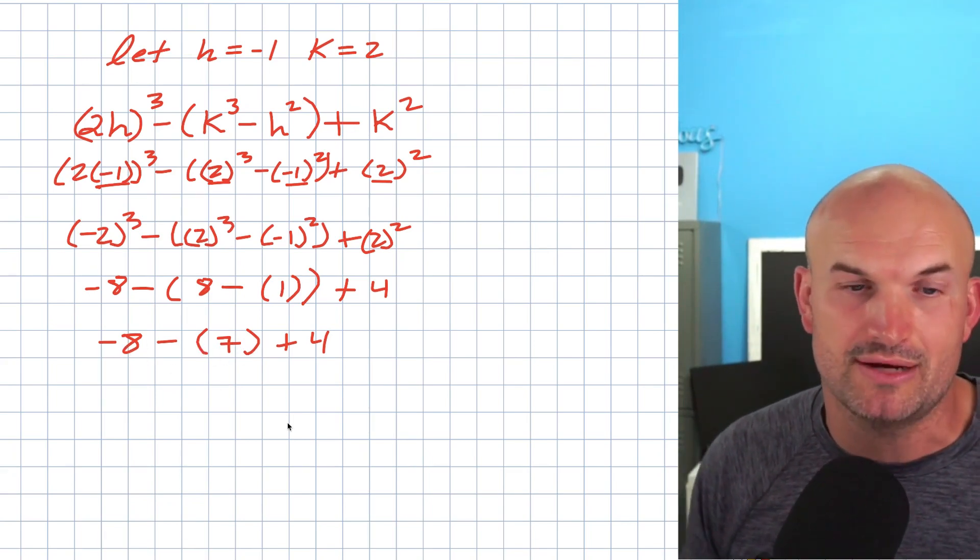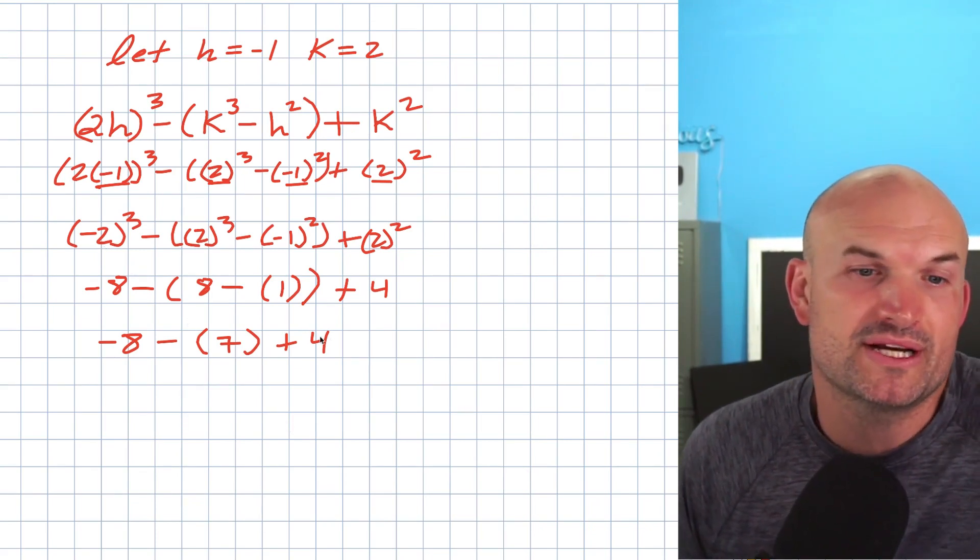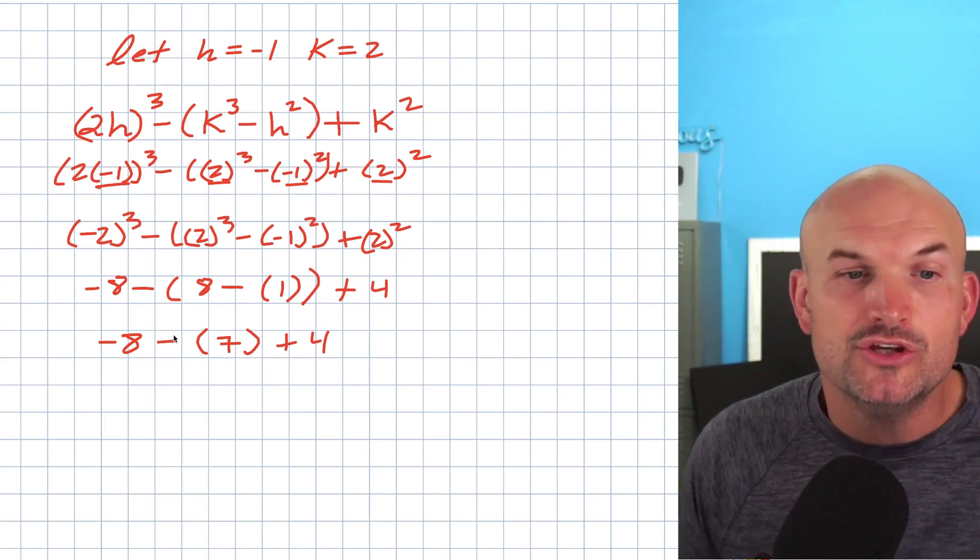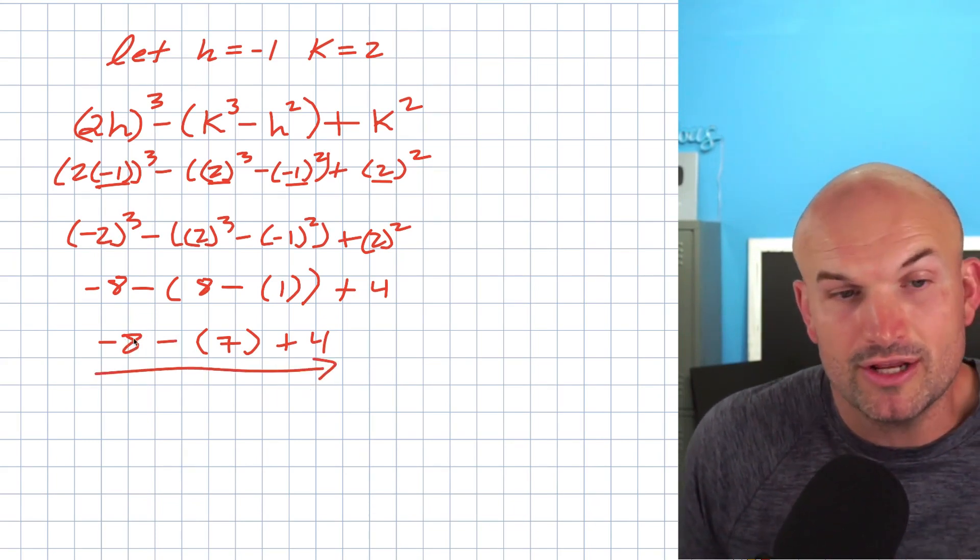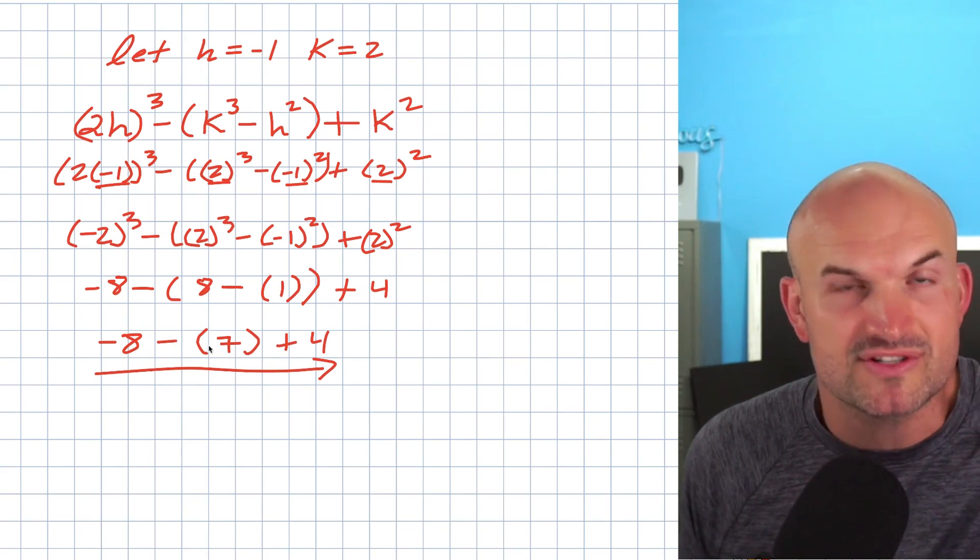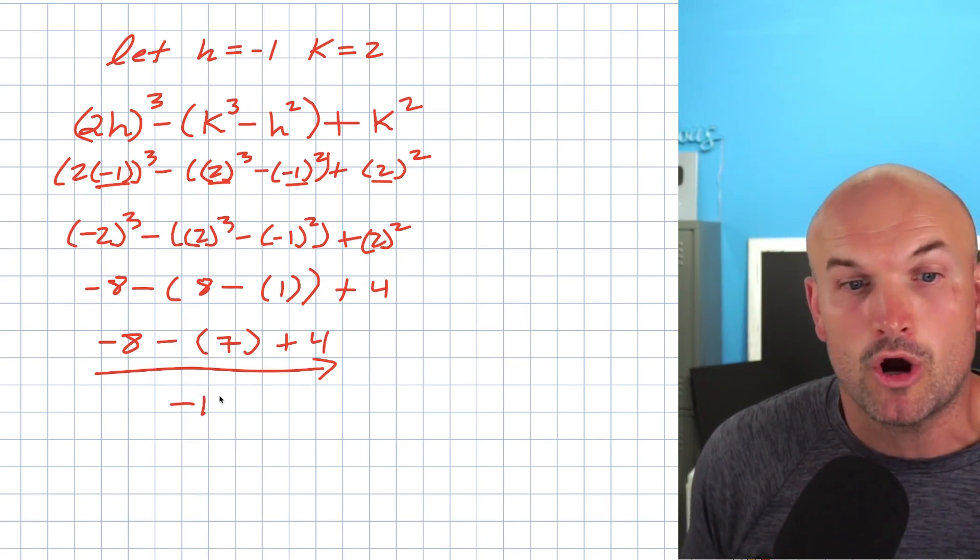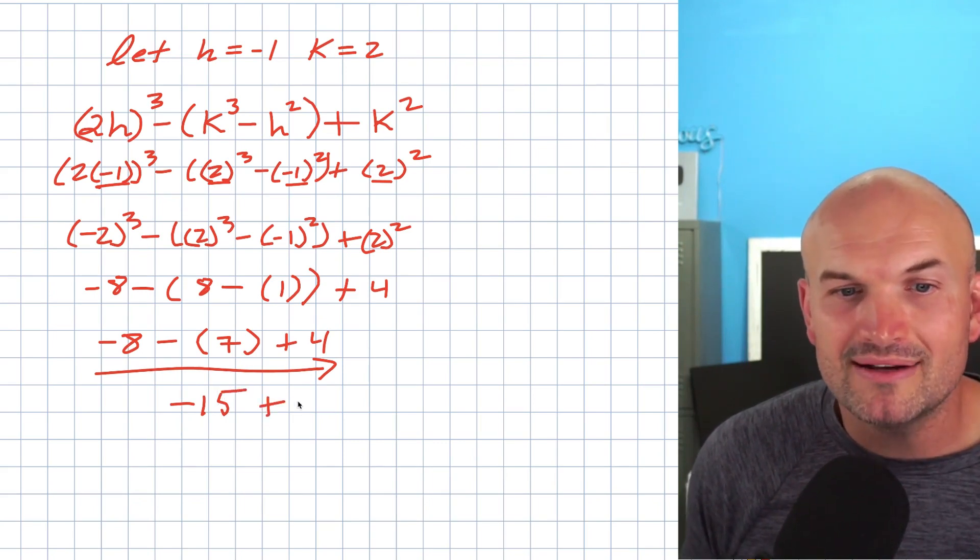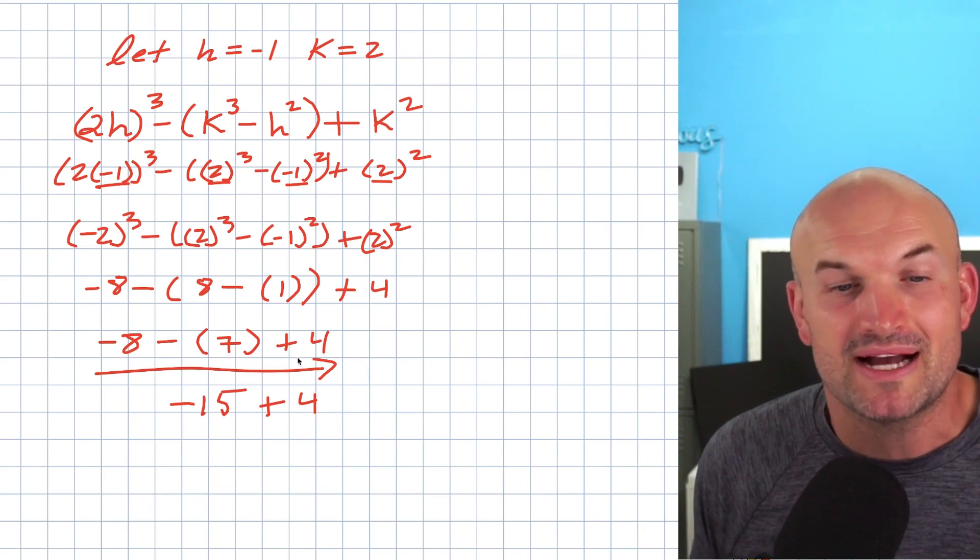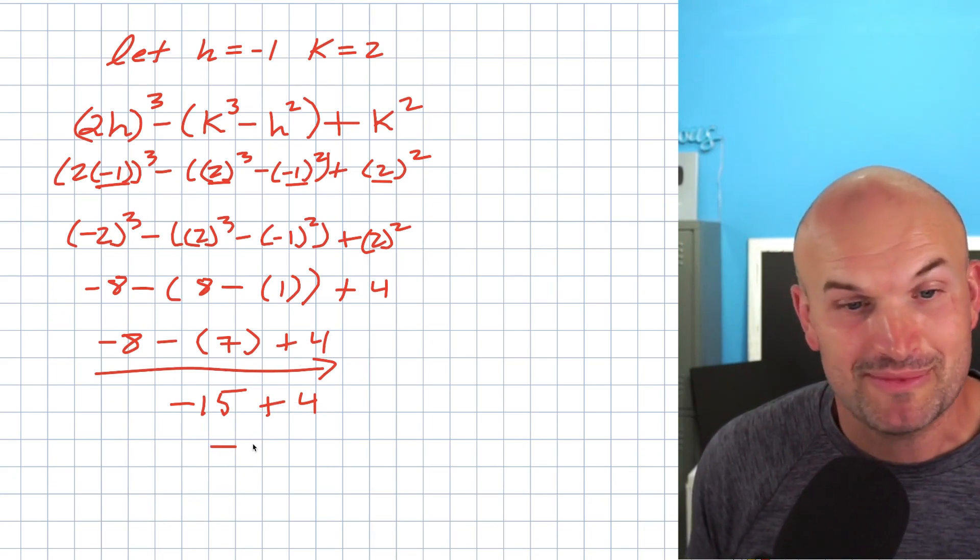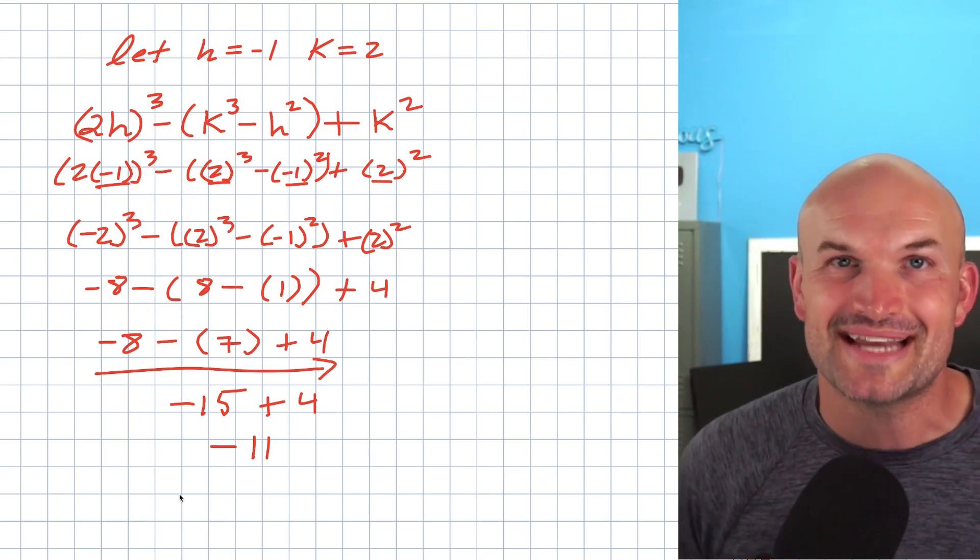Now here we have addition and subtraction, and we want to make sure we read this left to right. We don't want to add the seven and the four because we like addition more than subtraction. You have to work from left to right. Think about negatives like owing money. You already owe me eight dollars and now you're going to borrow seven more dollars. Well, how much money do you have? You don't have any money but you now owe me fifteen dollars. But now you found four dollars in your pocket. You owe me fifteen dollars but you have four dollars in your pocket. You give that four dollars to me, thank you very much. Now you only owe me eleven dollars, or we can say the answer is negative eleven.